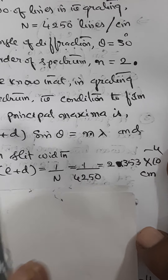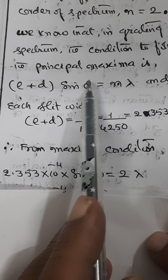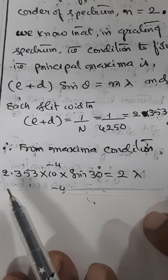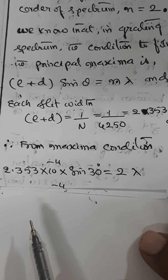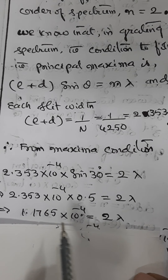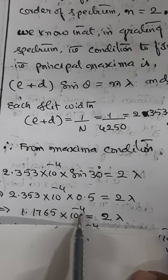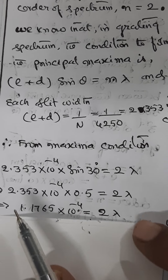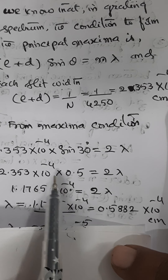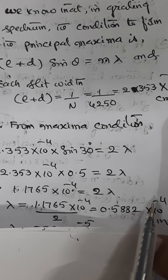We have to calculate lambda wavelength. Substituting that value: (e + d) × sinθ = nλ gives 2.353 × 10⁻⁴ × sin30° = 2λ. Sin 30° is equal to half, that is 0.5. So 2.353 × 10⁻⁴ × 0.5 = 2λ. Multiplying by 1/2, this becomes 1.1765 × 10⁻⁴. Dividing again by 2, lambda equals 1.1765 × 10⁻⁴ divided by 2, which gives 0.5882 × 10⁻⁴ centimeters.